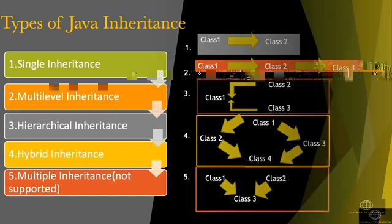Let's see inheritance in nested classes. Nested classes with the default access modifier are only accessible to subclasses if the subclass is located in the same package as the superclass. Nested classes with the protected or public access modifier are always inherited by subclasses.